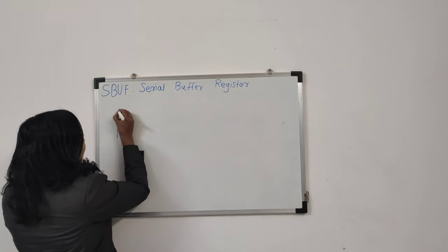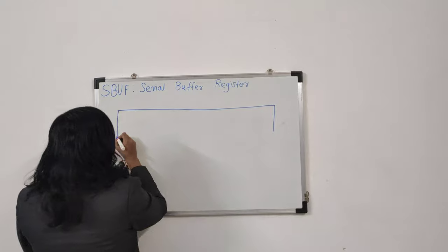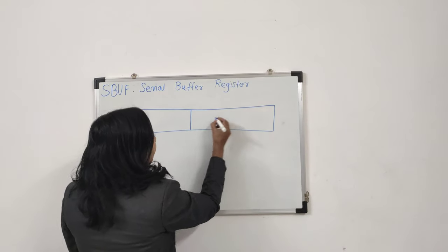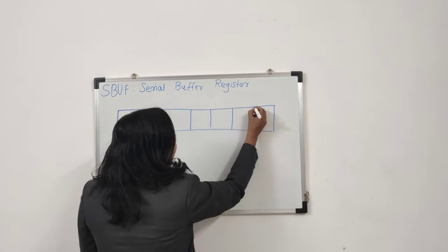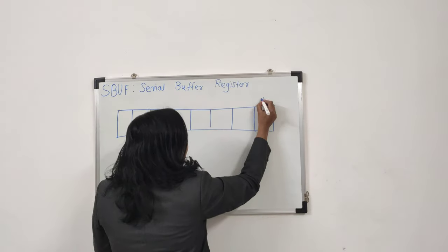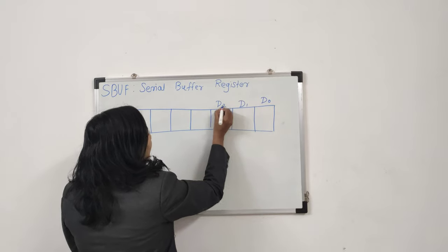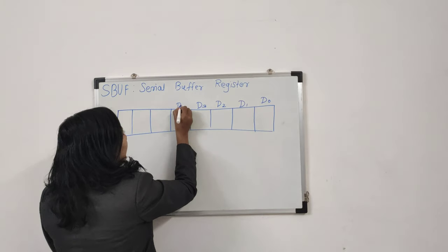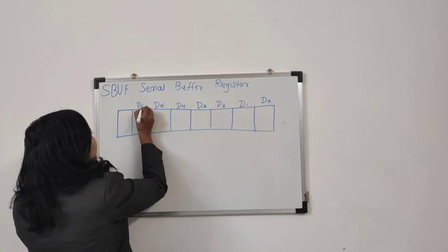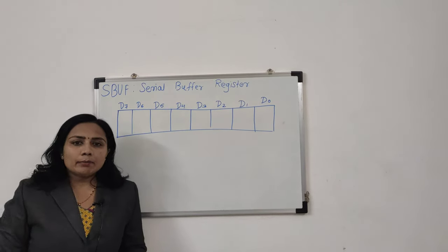The structure of this SBUF register is a simple one. We have 8 bit positions, which we call D0 to D7: D0, D1, D2, D3, D4, D5, D6, and D7.